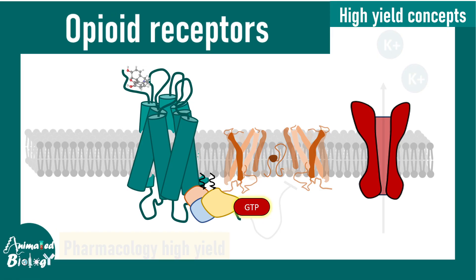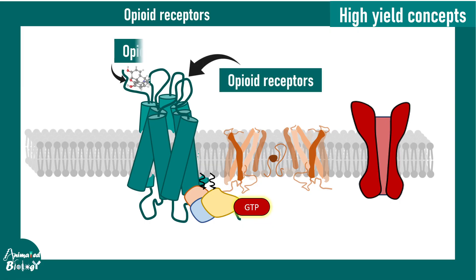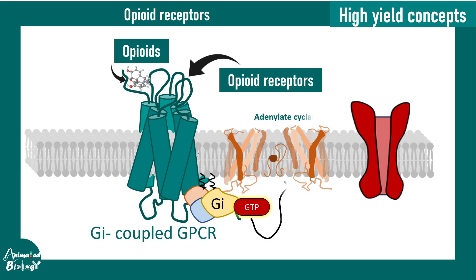Opioid receptors are G protein-coupled receptors which bind to opioids. Here the G protein is the Gi type, which means these proteins can actually inhibit the enzyme adenylate cyclase and decrease the cyclic AMP level in the cell.